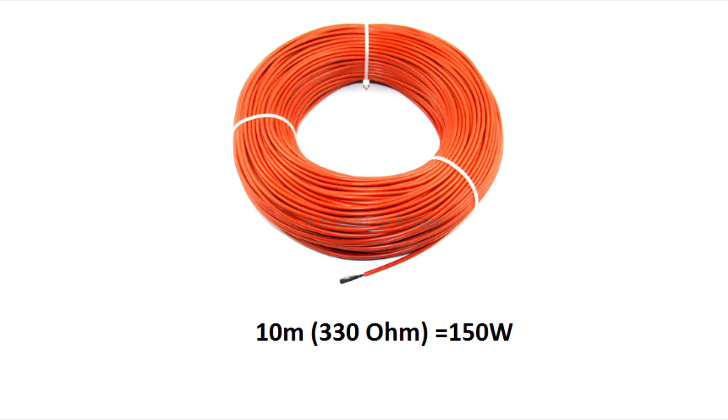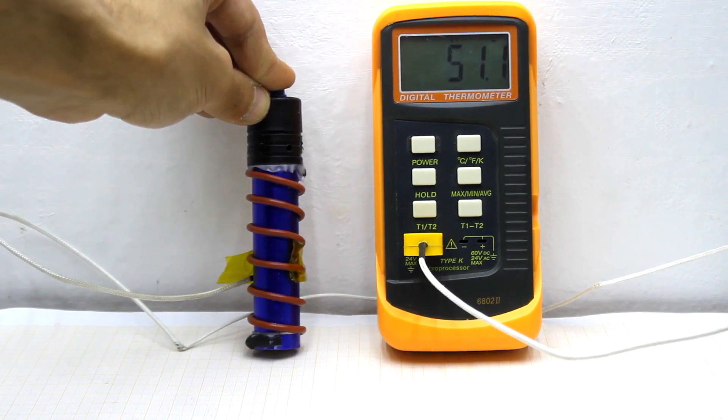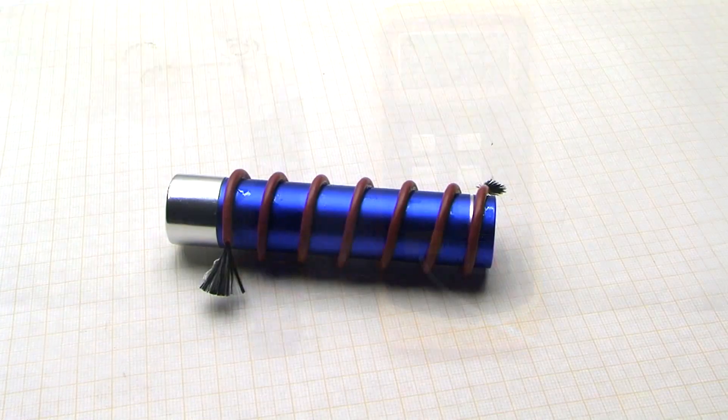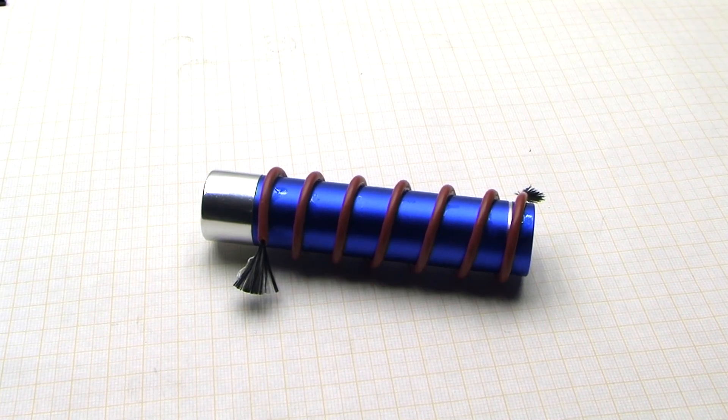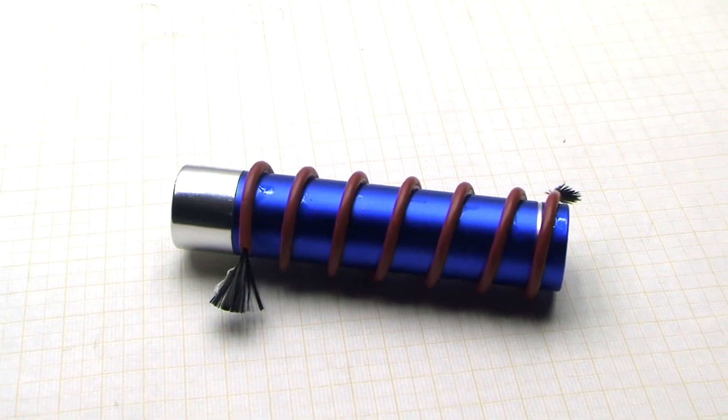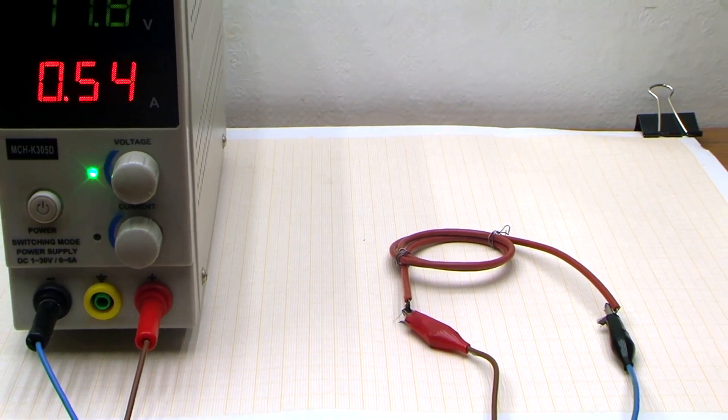Knowing some initial data and Ohm's law, it's easy to calculate the desired length of the heater. But you need to take into account that with the temperature growth the resistance will increase too, so the power will decrease. The length and resistance of my item isn't so important, because everyone will calculate the heater individually depending on the supply voltage and the length of the heater.